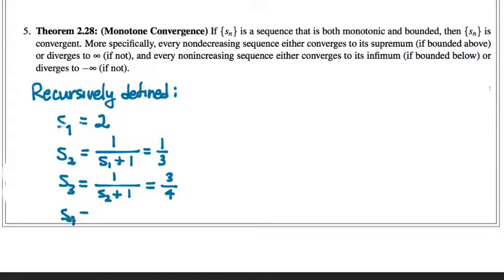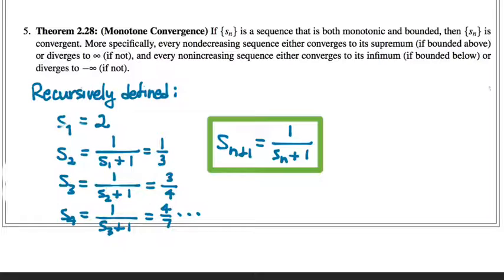S4, 1 over S3 plus 1. So 3 fourths plus 1, that's going to be 7 fourths, and so this becomes 4 sevenths, and so on. So we define the n plus first term of the sequence as 1 over the nth term plus 1. So these two pieces of data taken together, this formula, which is called the recurrence formula, and this formula, which provides us with the first term of the sequence, these two together form a recursively defined sequence. And here we see the first four terms of it.